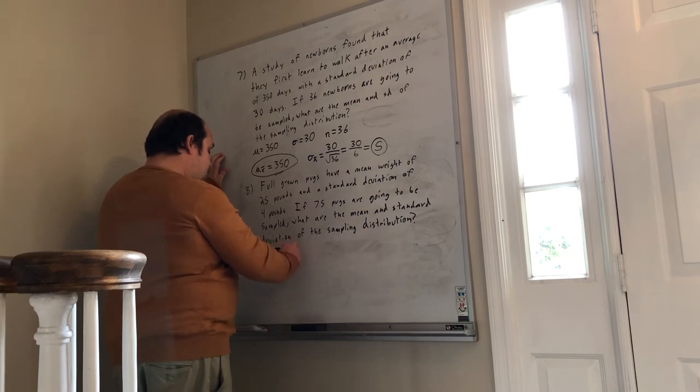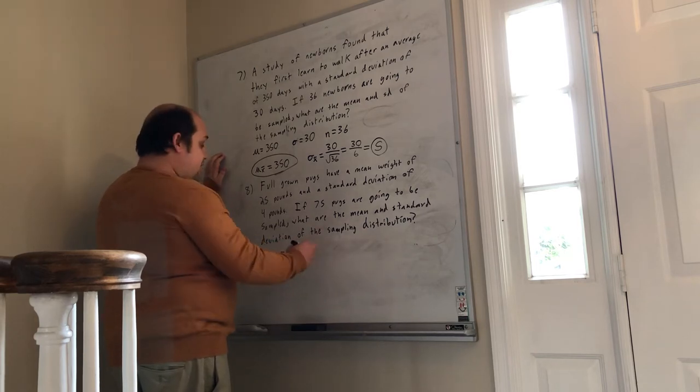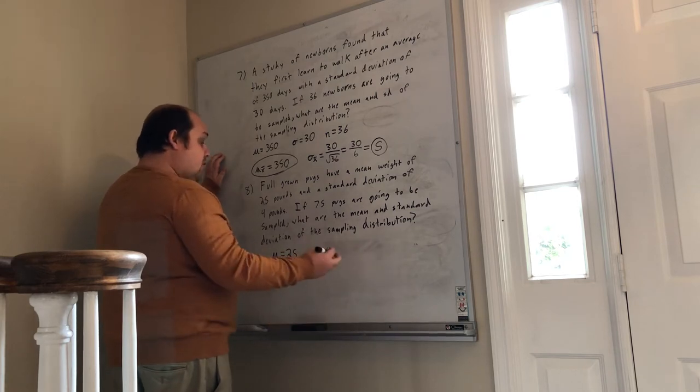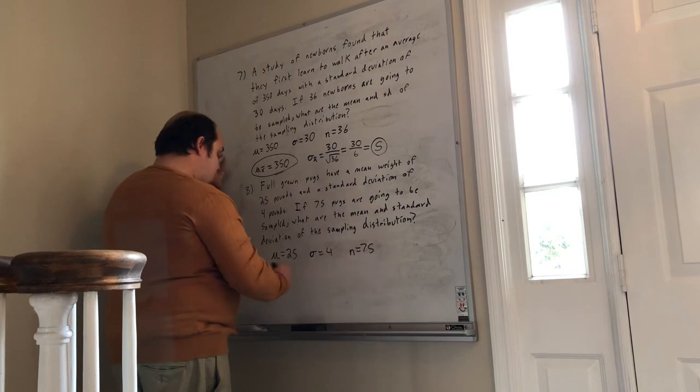Standard deviation of 4 pounds means sigma equals 4, and if we're going to look at 75 pugs, that's going to be my n. Again, the mean of the sampling distribution is super easy. I just copy down what I got as an original mean.